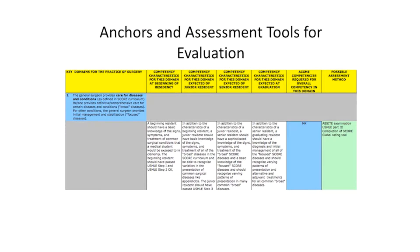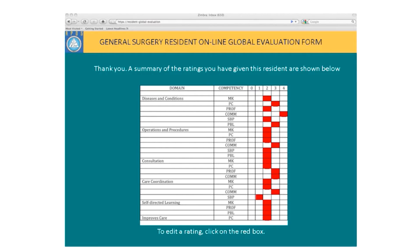An example is the care for diseases and conditions domain — specifically the medical knowledge competence. There are a series of milestones: the first is for the beginning of residency, where a resident should have basic knowledge of the signs, symptoms, and treatment of common surgical conditions. This progresses to the senior resident who has greater knowledge of diseases and conditions defined in SCORE, a basic surgical curriculum. The concept was that for each rotation, the resident would get an evaluation for each domain for each relevant competency. There are twenty-four different evaluation points — a ton of work for whoever is doing this.